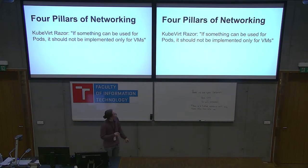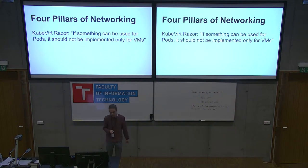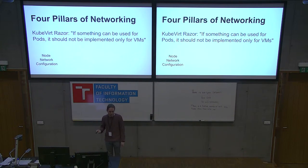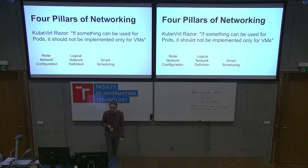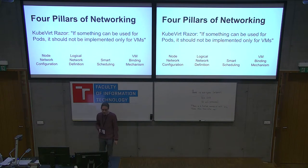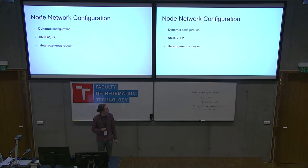The KubVirt Razor: if something can be used for pods, it should not be implemented for VMs. The four pillars are: node network configuration, logical network definition, smart scheduling, and VM binding mechanism. I will go through all of them now.